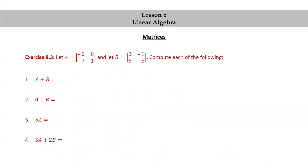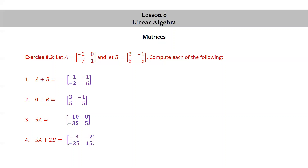Let's try an exercise. Let A = [-2, 0; -7, 1] and B = [3, -1; 5, 5]. Pause the video and compute each of the following, then resume to check your answers. A + B = [1, -1; -2, 6]. 0 + B = [3, -1; 5, 5]. 5A = [-10, 0; -35, 5]. And 5A + 2B = [-4, -2; -25, 15].